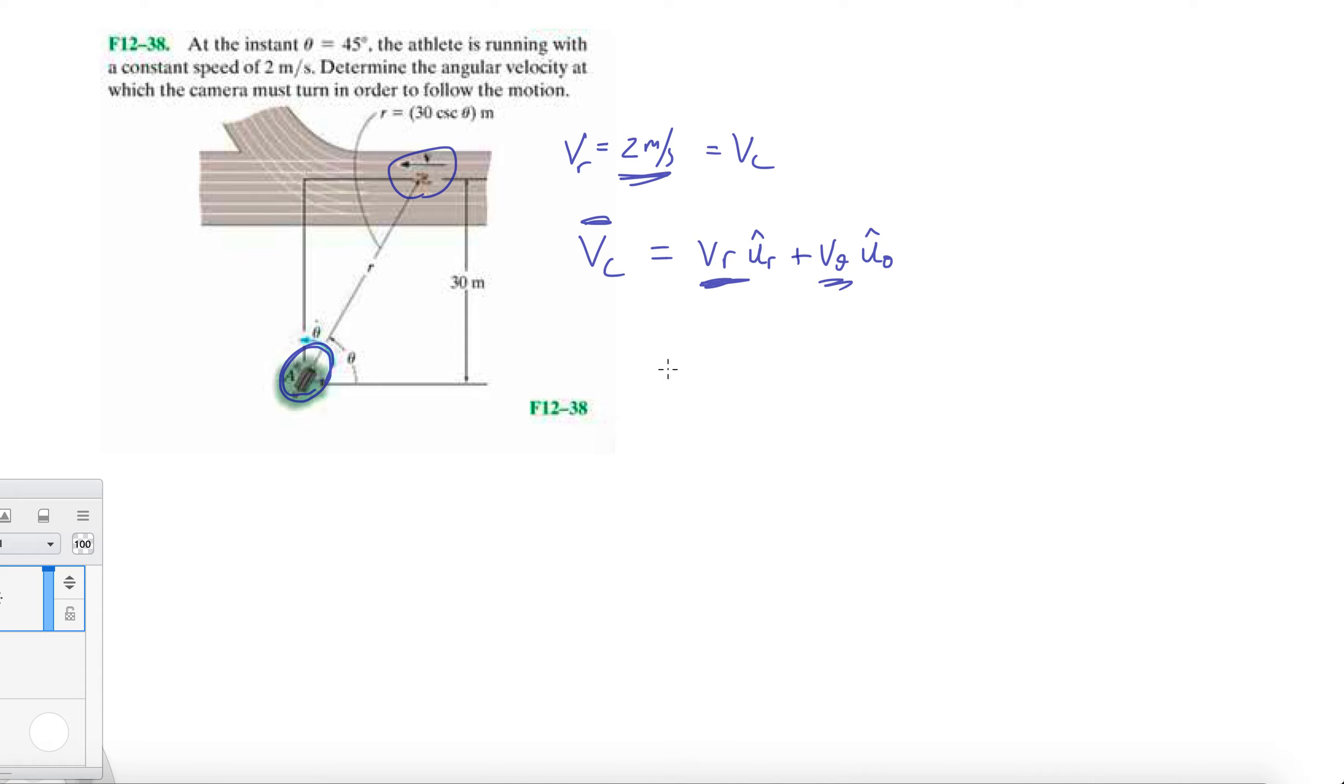The hardest part of this problem is probably getting the derivative of cosecant because I definitely don't remember it. I'm just going to go to the tables and look for it. Knowing it off the top of your head isn't going to mean anything a couple years from now. So let's determine the angular velocity.